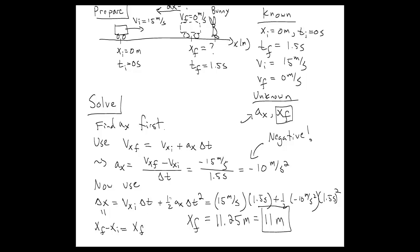So the final x position is 11 meters to two significant figures, and that is the answer to the question. They didn't tell us exactly where the bunny was, so we don't know if we hit it or not. Hopefully we didn't.